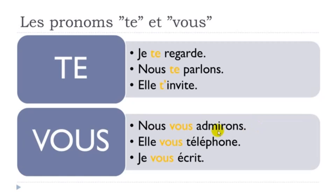You should be careful because a common mistake is to look at the order of the sentence — Nous vous admirons — and think that just because vous is before the verb, it must be the subject. It's not. In this case, nous is the subject. Nous admirons — we admire you.